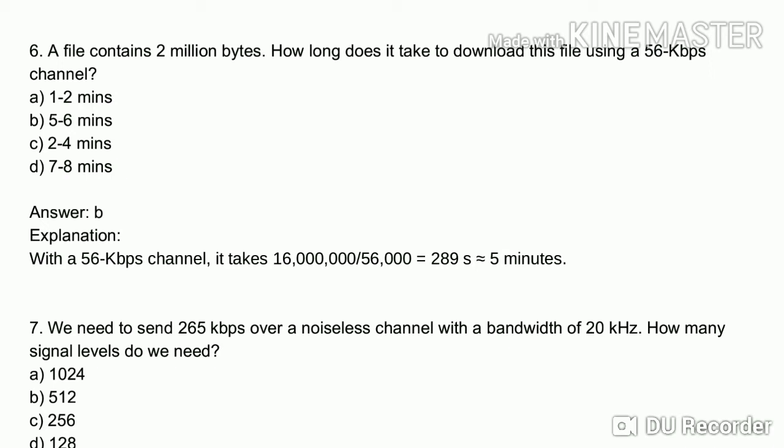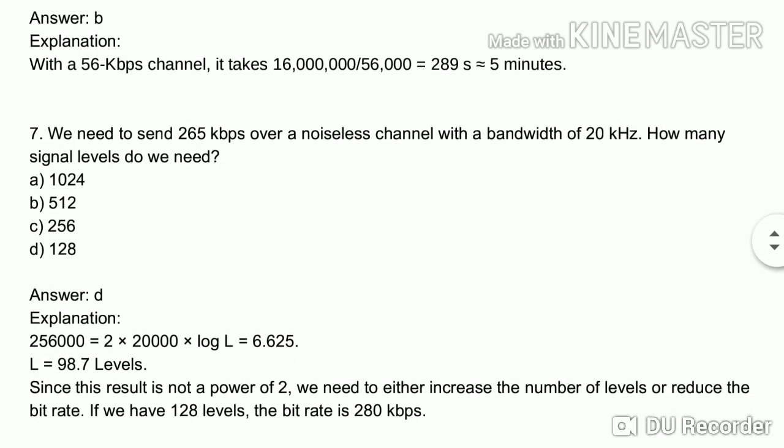We divide by 56,000. Adding the values and dividing by 2,000, we get approximately 289 seconds, which is about 5 minutes. So the answer is B — approximately 5 minutes to download the file.